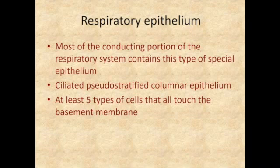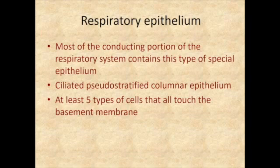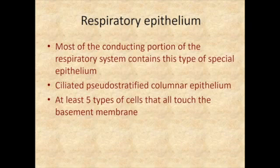Most of the respiratory system is going to have an epithelial layer that has five different cell types in it, and we call it respiratory epithelium. The most common or most prominent cell in this epithelial layer is a ciliated columnar cell. That cell has a lot of cilia, and collectively the epithelium is pseudostratified — it looks pseudostratified in most places. That means it's really one layer but looks like more than one; all of the cells touch the basement membrane, which is why they call it pseudostratified.